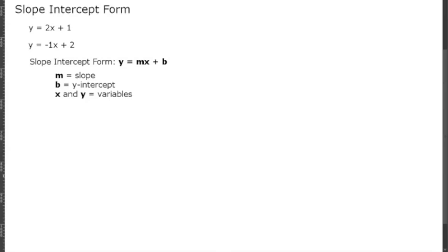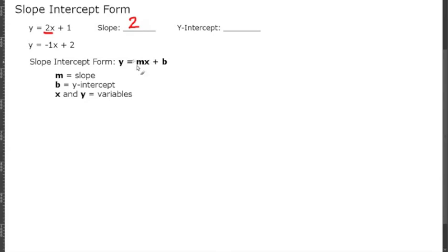Knowing that slope is m and the y-intercept is b, let's look at that first equation up above. Using the same formula, if slope is m, then y equals m times x — m is always going to be with the x. So our 2 will be our m, which is our slope. And the y-intercept is always what's added to that mx, so the 1 is going to be our y-intercept.